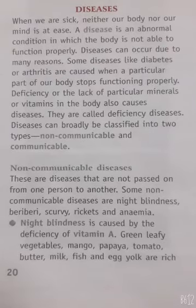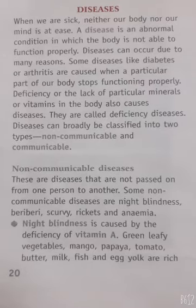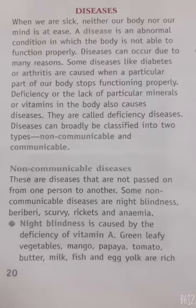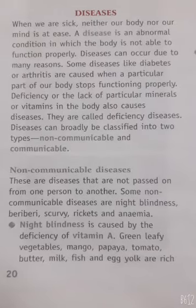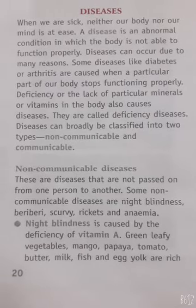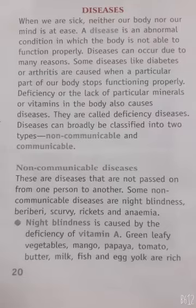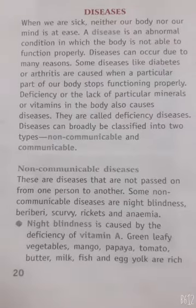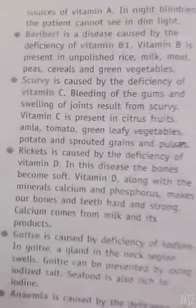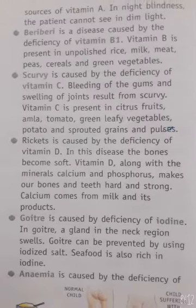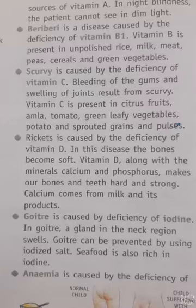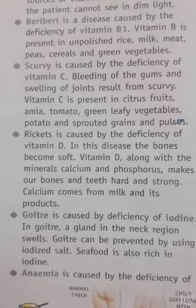Diseases can be classified into two types: non-communicable diseases and communicable diseases. Diseases that are not passed on from one person to another are non-communicable diseases. Some examples are night blindness caused by deficiency of vitamin A, beriberi due to lack of vitamin B1, rickets due to lack of vitamin D, and anemia due to lack of iron.